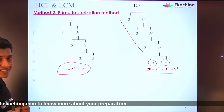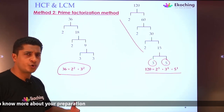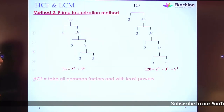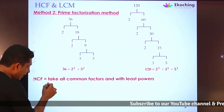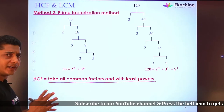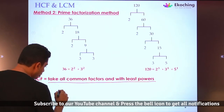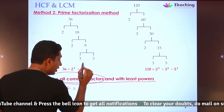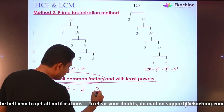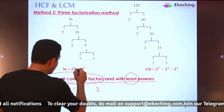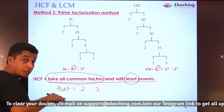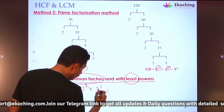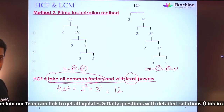How do we find HCF through prime factorization? HCF: take all common factors with the least powers. Common factors between 36 and 120 are 2 and 3. Least power of 2 is 2², least power of 3 is 3¹. So HCF = 2² × 3¹ = 4 × 3 = 12.